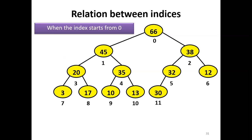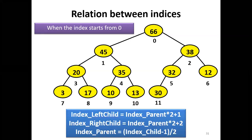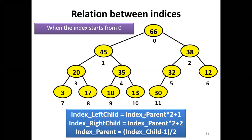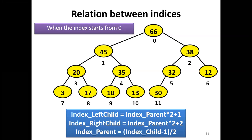If we start the index from zero, the previous pattern changes. The left child index becomes the parent index times 2 plus 1, and the right child index becomes the parent index times 2 plus 2. For example, 2 times 0 is 0 plus 1 is 1; and 2 times 1 is 2 plus 1 is 3.